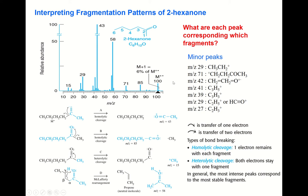There are also minor peaks in the spectrum. Mass number 29 is due to the ethyl cation. Mass number 71 is due to another fragment from bond cleavage. Peaks at 42, 41, and 39 are also present, corresponding to additional smaller fragments. Overall, there are many different kinds of fragments observed.